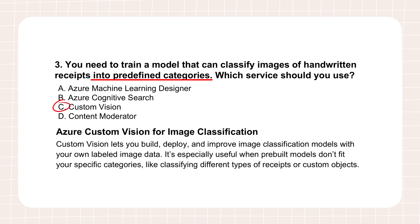Why not Azure Machine Learning Designer, Cognitive Search, or Content Moderator? Azure Machine Learning Designer is much more comprehensive — it's for building custom ML models, yes, but it requires more ML knowledge and more knobs to turn. Cognitive Search, as we discussed, is mainly for indexing and searching; it can analyze images but can't train custom classifiers like this. Content Moderator is about spotting potentially unsafe or unwanted content, not categorizing receipts. For custom image classification without deep ML expertise, Custom Vision is definitely the go-to.